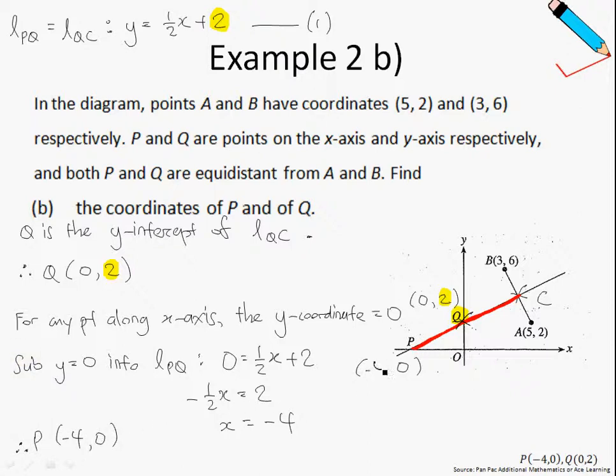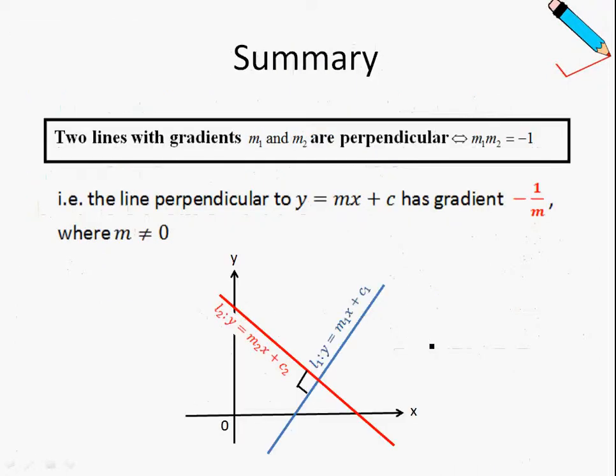We have solved example 2. Just to summarize something very important: when two lines are perpendicular, then we can say that the product of their gradients is simply negative 1.